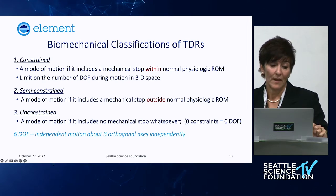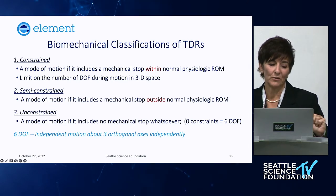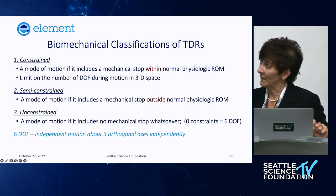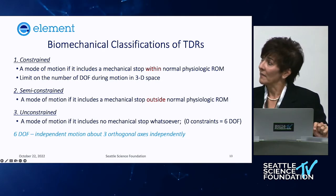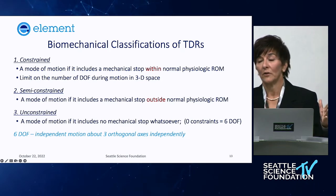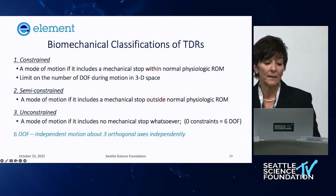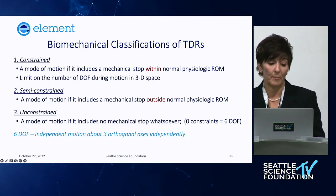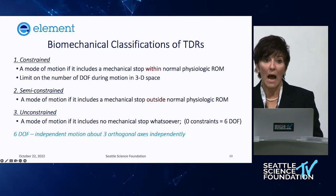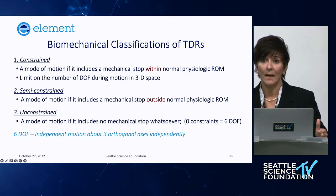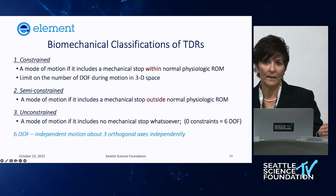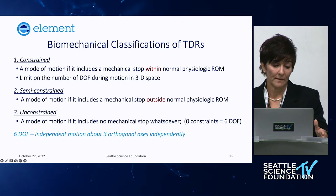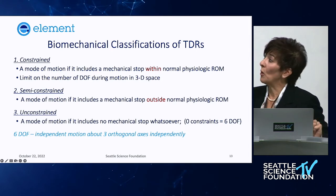There are different classifications for TDRs. Constrained: a mode of motion that includes one mechanical stop within the normal physiological range of motion, stopping within a non-destructive range in all three planes, limiting degrees of freedom in this three-dimensional space. Semi-constrained: a mode of motion with a mechanical stop outside the normal physiological range, allowing the device to move more freely because the stop is set beyond the natural native range of motion.